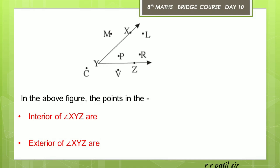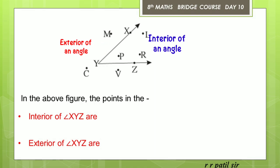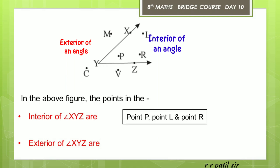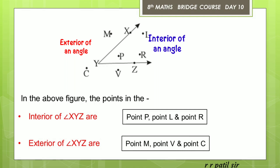Now observe this figure and tell me the points in the interior of angle XYZ and the points in the exterior of angle XYZ. The points in the interior are point P, point L, and point R. The points in the exterior of angle XYZ are point M, point V, and point C. Do you understand?